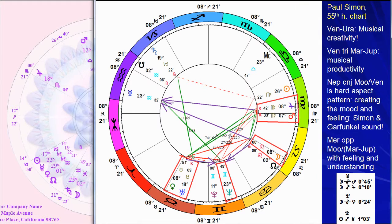We also see Mercury in opposition to the Moon and the Mars-Jupiter conjunction. Here's a diagram of that with the tree diagram. Mercury opposition Moon-Jupiter at a 10-minute orb, and also Moon-Mars at a 45-minute orb. So Mercury at Moon-Mars, Mercury at Moon-Jupiter, giving feeling and understanding. We're getting a lot of strong patterns in the 55th harmonic as we expected, and we expect to see Mercury involved in a pattern just like we saw with Carole King and some of the other songwriters — and with Bob Dylan as well. The Mercury at Moon-Mars and Moon-Jupiter fits his poetic feeling and emotion, conveying those feelings through the music. He is a songwriter.